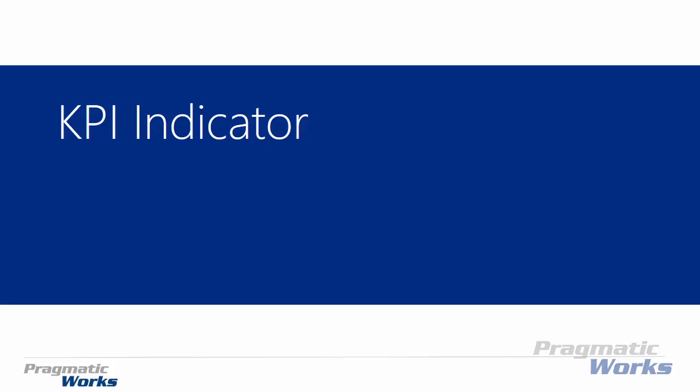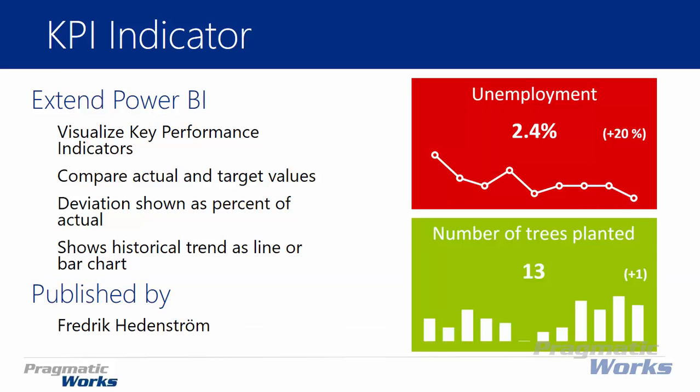Welcome back. In this video we're going to be looking at the KPI indicator, which is a great way to visualize key performance indicators. It allows you to compare actual and target values against each other, and you even have an option to show the deviation between the two as a percentage or as a hard number. It also allows you to show a line chart or a bar chart alongside the KPI value.